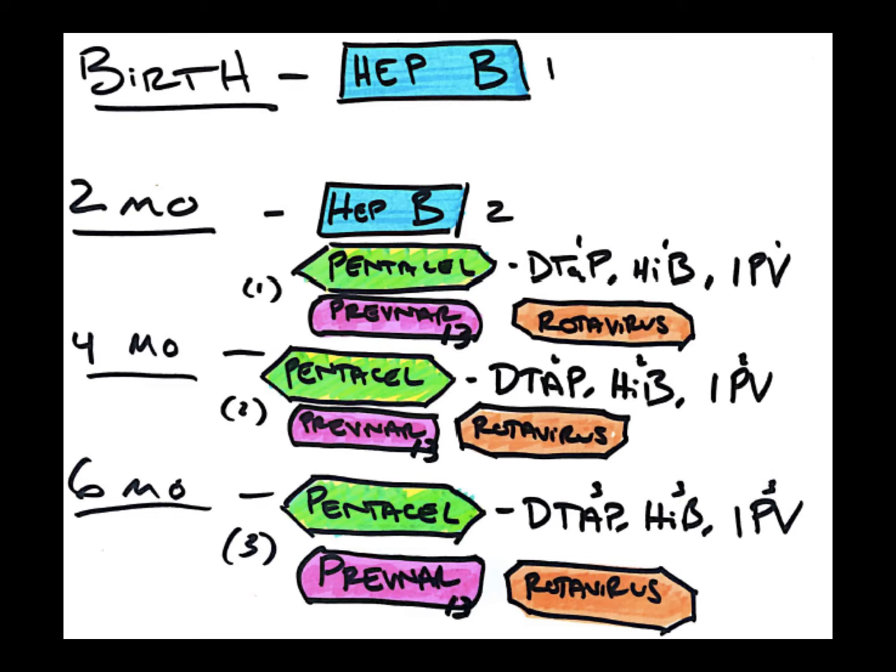And you can remember that Prevnar, the one with the least protein conjugates, only 13 protein conjugates, has only two syllables. The less number of syllables is the less number of protein subunits.